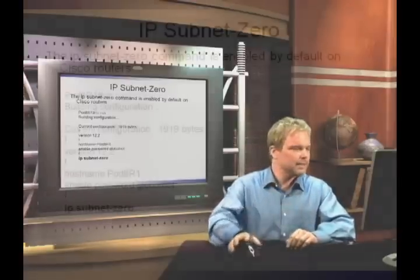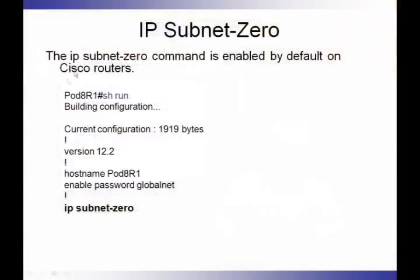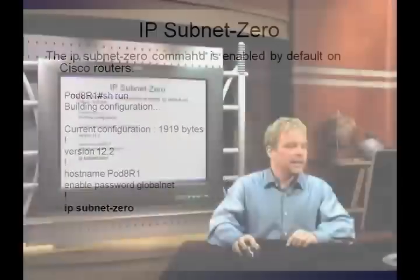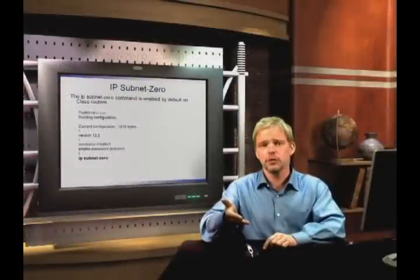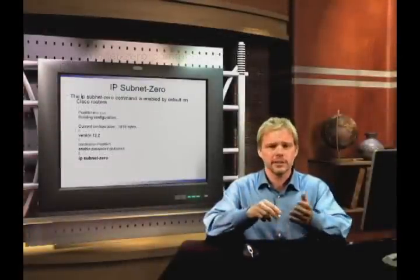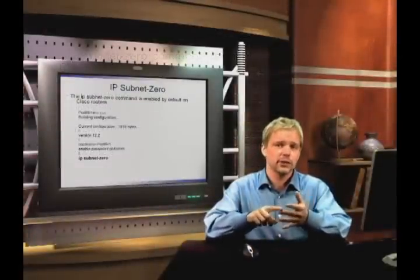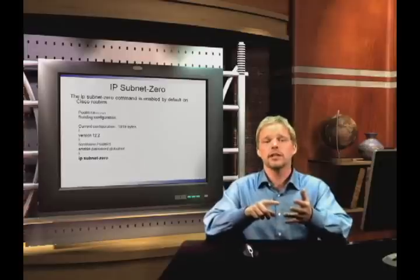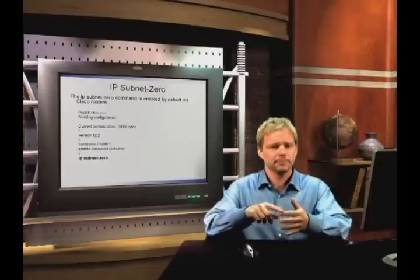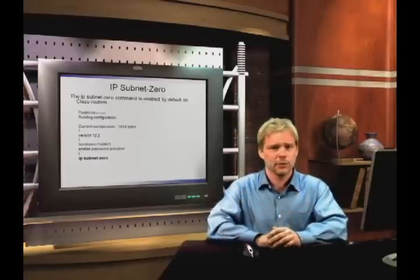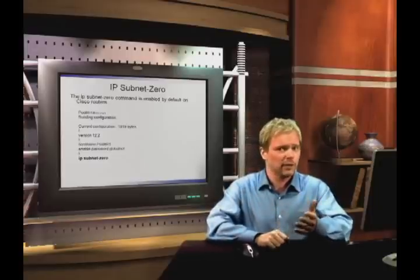The reason for that is this: inside a router, you must have the command 'ip subnet-zero' turned on. If that command is not turned on, you can't start at 0. For example, if we were using the 240 mask, instead of starting at 0, 16, 32, we'd start at 16, 32, 48, and we couldn't use the last mask of 240 either.